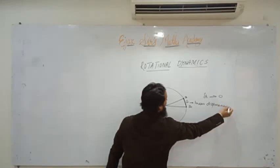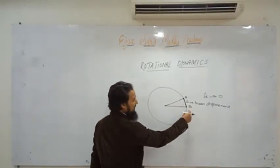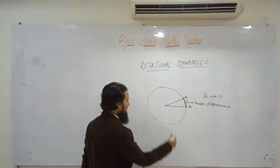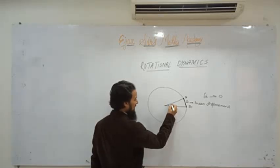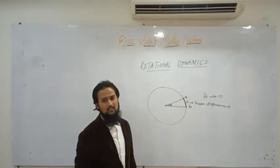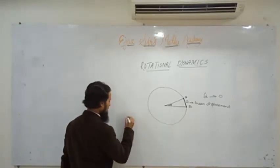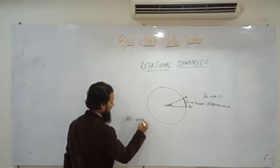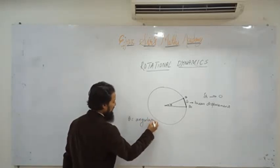When a particle moves from point A to point B along the circumference, it also makes an angle at the center. We denote this angle by dθ (d theta) or simply θ. This angle dθ is called angular displacement. We can denote it by theta.